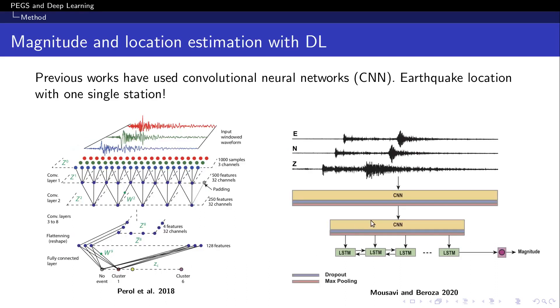So the problem of estimating magnitude and location with deep learning has been addressed recently for earthquake data and these works have shown that the location task can be achieved just by using data from one single station. So this is a critical point to be made on deep learning because it shows how it has a critical impact on the way we, as seismologists, we deal with data and we analyze the data.